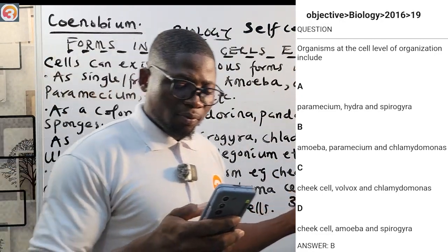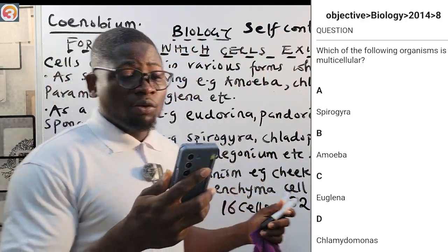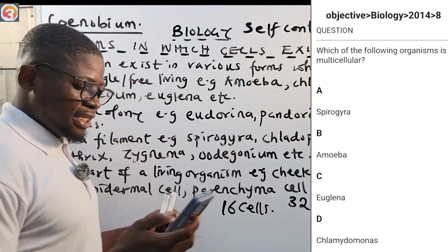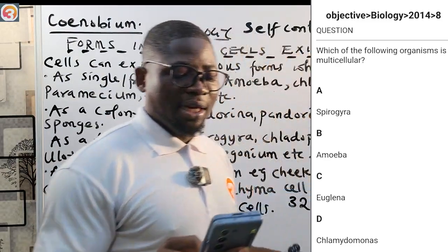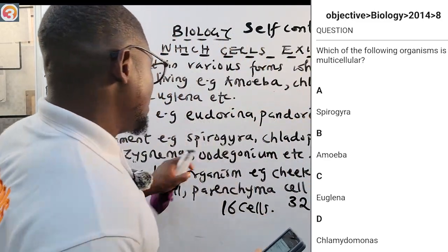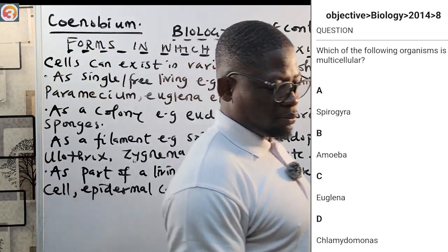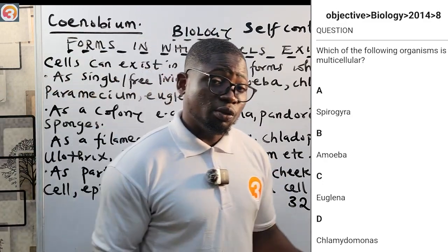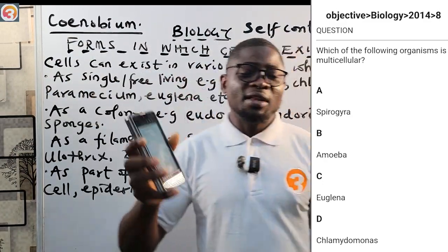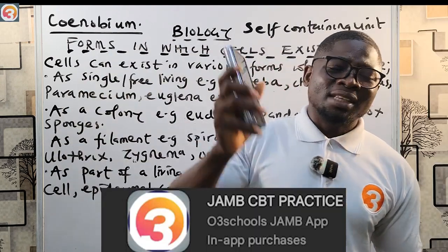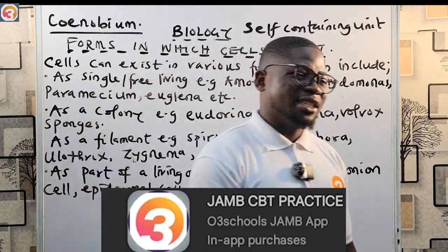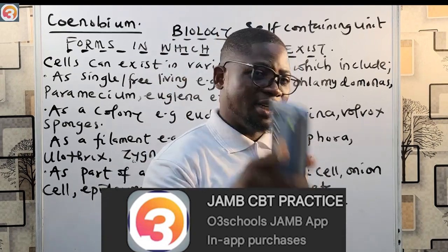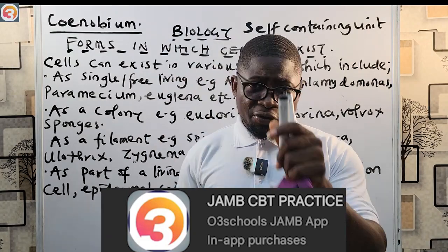Question 5 (2014, No. 8): Which of the following organisms is multicellular and exists as a filament? A — Spirogyra: filamentous and multicellular — correct. B — Amoeba: single free-living. C — Euglena: single free-living. D — Chlamydomonas: single free-living. The correct answer is A — Spirogyra. Those are five past questions from the app. Download it, subscribe to this channel, and start practicing today. You will not write JAMB twice — in Jesus' name. Study, pass at once. Love you and see you in the next episode.